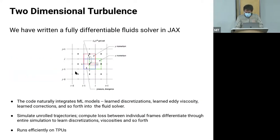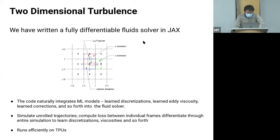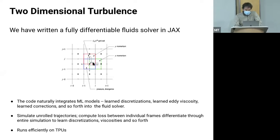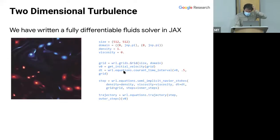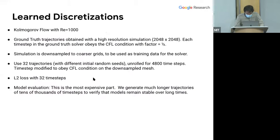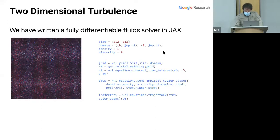We used 2D Kolmogorov flow—2D turbulence is not 3D turbulence but you can iterate much faster. We trained on one domain then tested on larger domains, different forcing, and higher Reynolds numbers. To do this we wrote and open-sourced a fully differentiable fluid solver in JAX, called JAX-CFD (jax-cfd on GitHub). It's fully differentiable, runs efficiently on hardware accelerators, and uses a staggered grid discretization with velocities on face centers and pressures at cell centers.